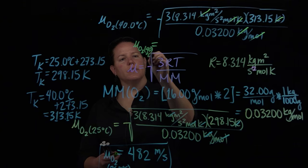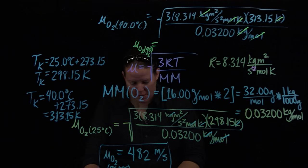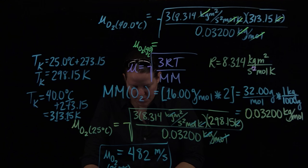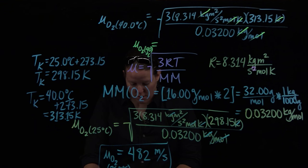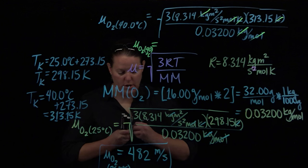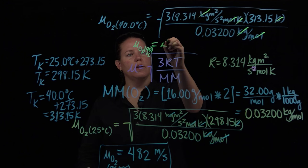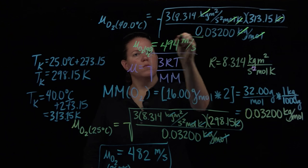So this is 40°C. I'm going to plug this into my calculator. 3 times 8.314 times 313.15 divided by 0.03200. Got a number before the square root of 244,000-ish. I take that to the one-half power, I get 494 meters per second.